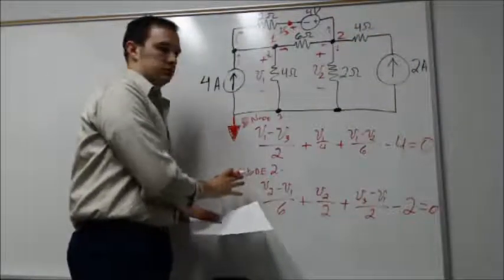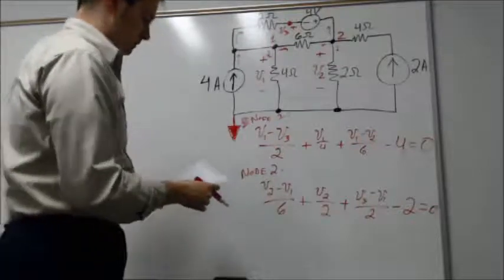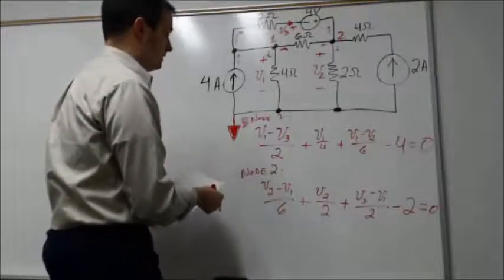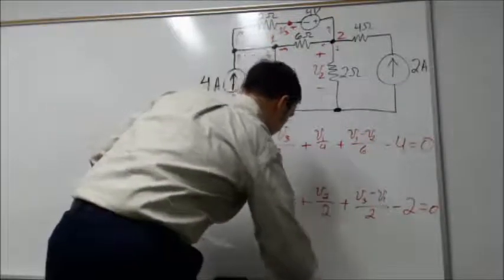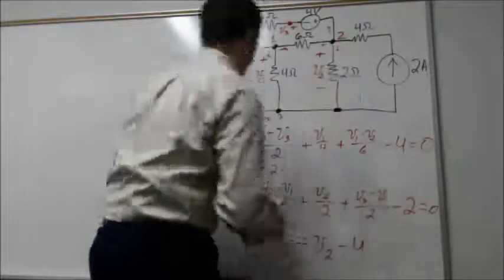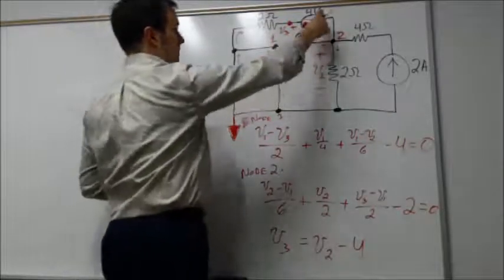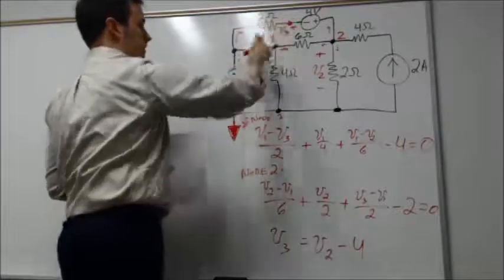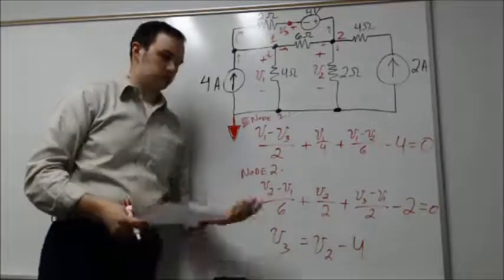We need a third equation to relate V3 with V2. We specify that V3 equals V2 minus the 4 volts across this independent voltage source. You're comparing the voltage at V2, dropping 4 volts, and that gives V3. This gives us all the relationships needed to solve using linear algebra, set up a matrix, or substitute. This is another alternative we didn't see in class, but it's helpful for more practice with the node voltage method.